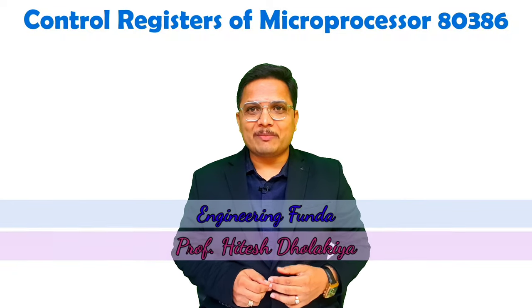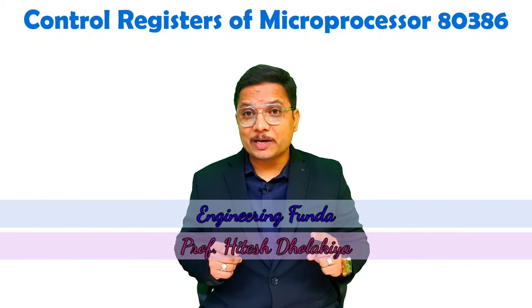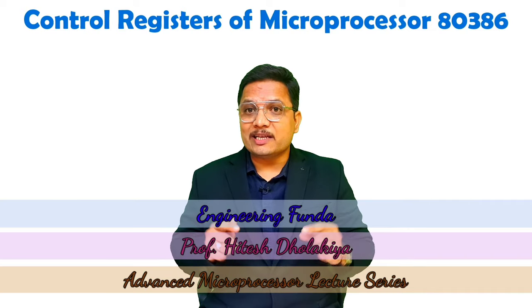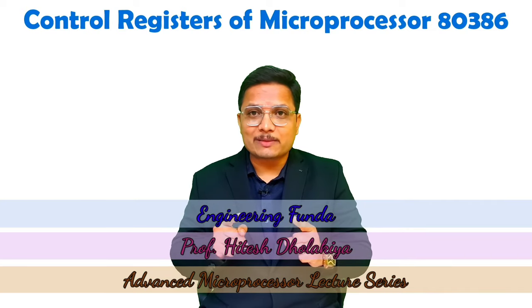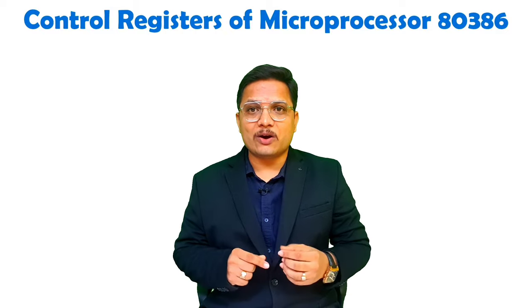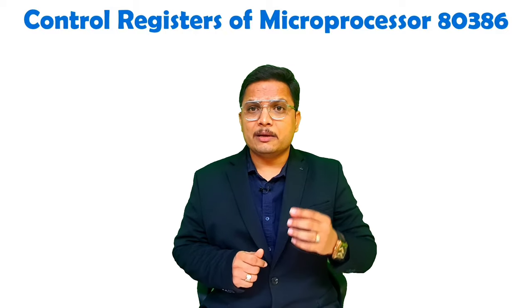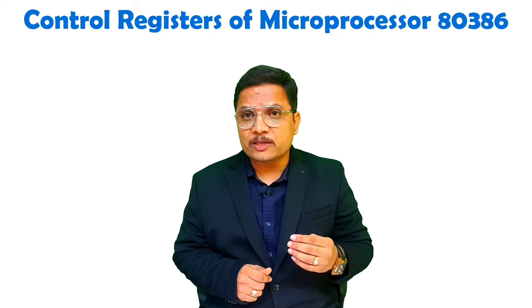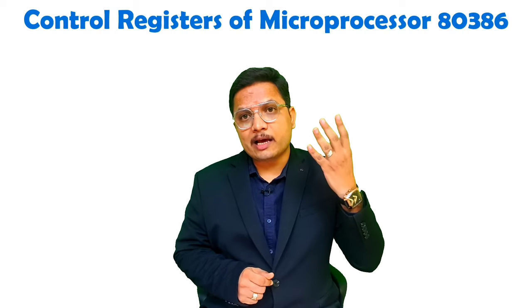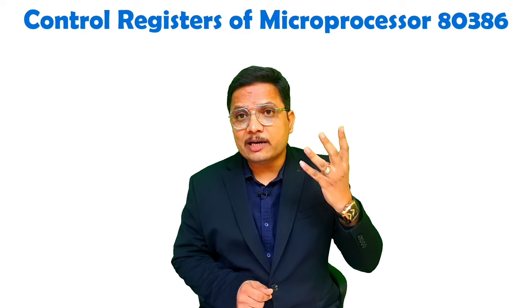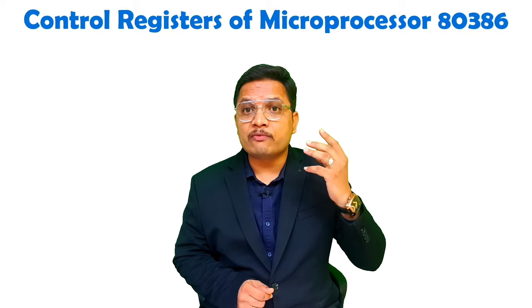Welcome to Engineering Funda family. This video is part of the Advanced Microprocessor video lecture series. In this video, I will explain the control registers of microprocessor 80386. With microprocessor 80386, there are 4 control registers: CR0, CR1, CR2, and CR3. Each of these control registers has a size of 32 bits.